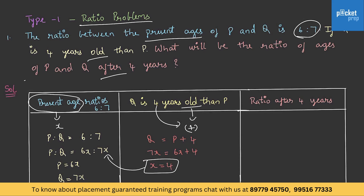On substituting x equals 4 in the ratio, we get P to Q equals 24 to 28. And what will be the ratio after 4 years? The ratio we have achieved is 24 to 28, and after 4 years it would be 28 to 32, by adding 4 to both the numbers.